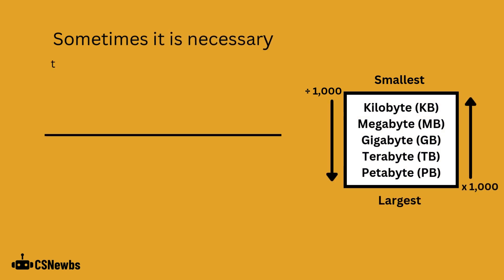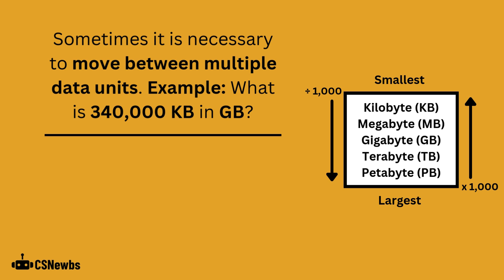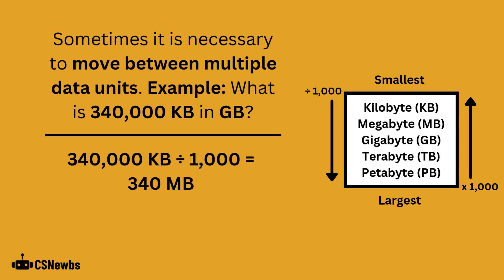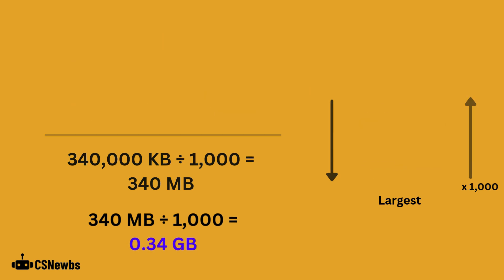Sometimes it is necessary to move between multiple data units. For example, let's work out what 340,000 kilobytes is in gigabytes. First we need to convert the kilobytes into megabytes by dividing by 1000, giving us 340 megabytes. Now we divide by 1000 again to turn it into gigabytes, which gives us 0.34 gigabytes.